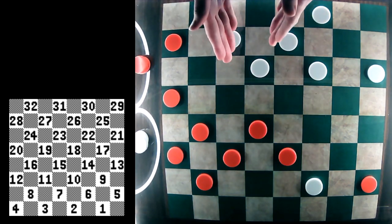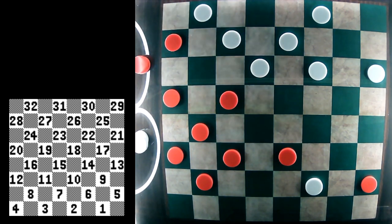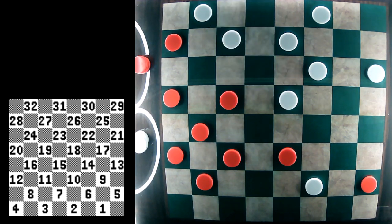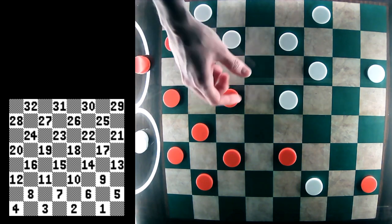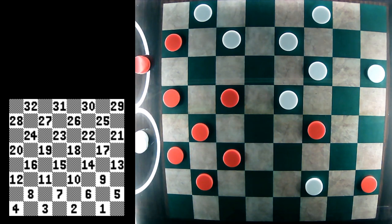Red is going to continue to put pressure on white's double corner. And white has to evade some trouble by going 23-18. Now certainly 19-24 can be played, but it's best to simplify matters by going 10-14 next for red.